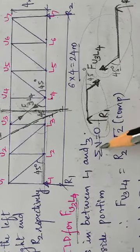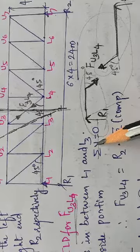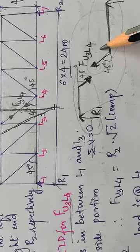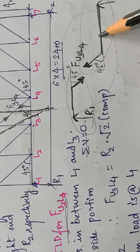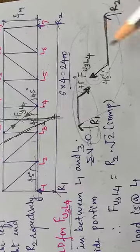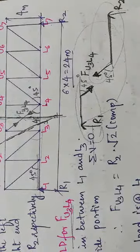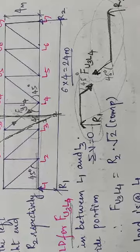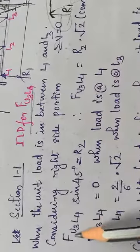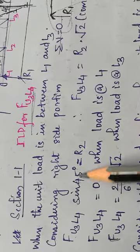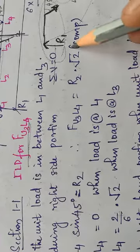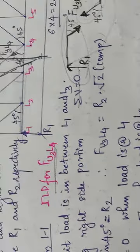Resolving along the vertical direction: force u3L4 × sin45 = −R2, because both are in the same direction. Sending one to the right-hand side gives a minus sign, so F_u3L4 × sin45 = R2. Since sin45 = 1/√2, the force equals R2√2 and it is compressive in nature.